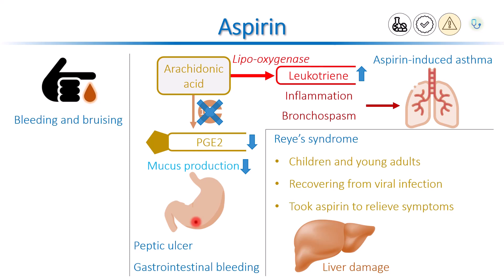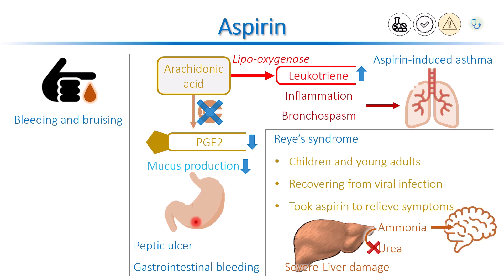The liver cells normally convert ammonia to urea, which is excreted in the urine by the kidneys. When the liver damage is severe enough, it cannot convert ammonia, and the ammonia accumulates in the blood and travels to the brain. Ammonia is toxic to the brain. This can lead to serious neurological symptoms, such as cerebral edema, seizures, and altered mental status.